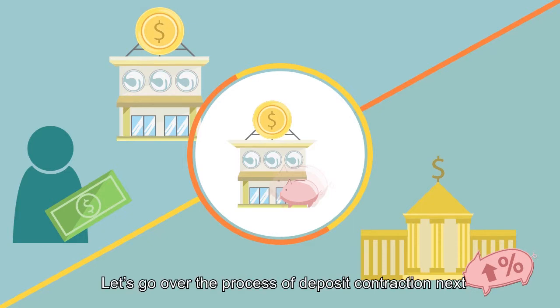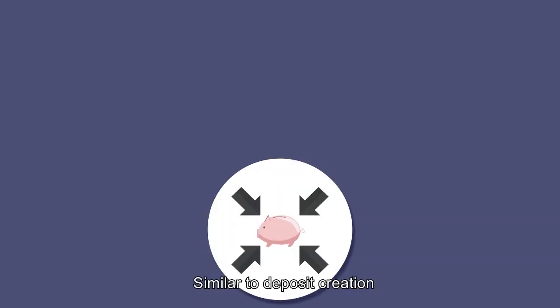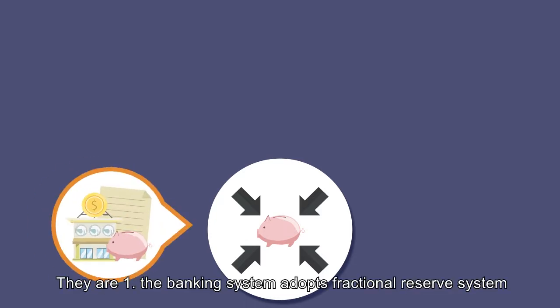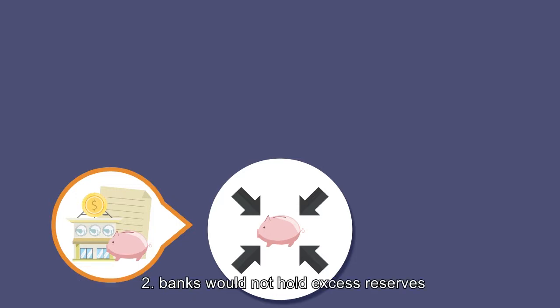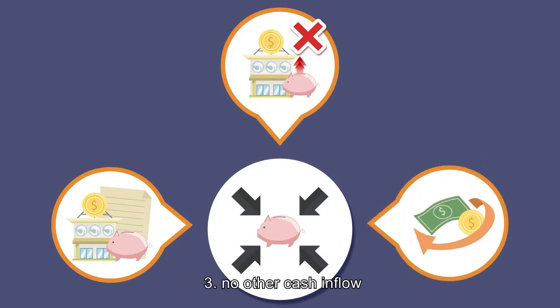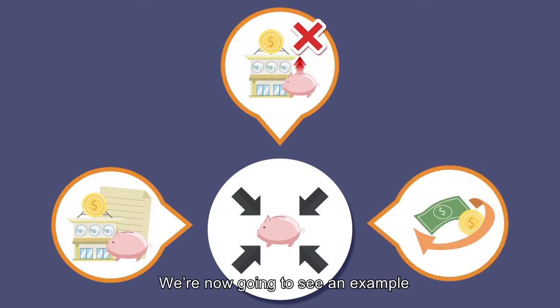Let's go over the process of deposit contraction. Similar to deposit creation, there are several assumptions while calculating deposit contraction. They are: 1. The banking system adopts a fractional reserve system. 2. Banks would not hold excess reserves. 3. No other cash inflow.